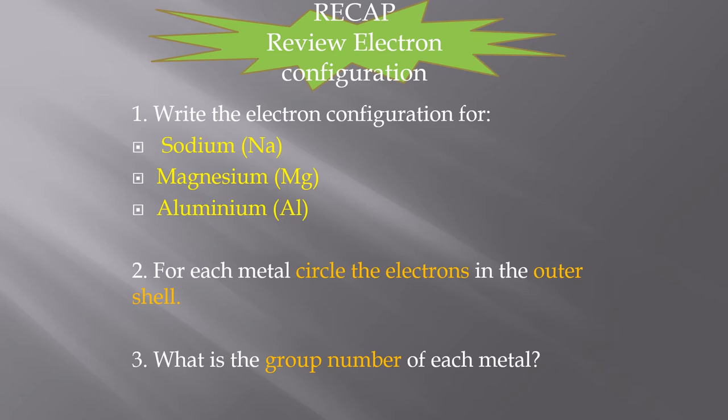Right, before we go on, a quick task for you to have a go at. Write the electron configuration for sodium, magnesium, and aluminium. Now, with these, we're going to have a look at the electrons in the outer shell, and look at the group number of each metal.